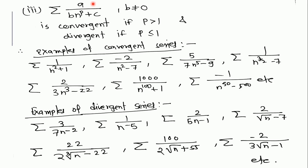For another type: if we have a series a / (b * n^p + c), where b is not equal to 0 — if b equals 0 then this becomes a constant series which is divergent — this series is convergent if p is greater than 1, and divergent if p is less than or equal to 1. Note that b must not equal 0, because if b equals 0 and a/c is not equal to 0, then this becomes a divergent constant term series. We can prove this using the comparison test: the p-series is convergent for p greater than 1 and divergent for p less than or equal to 1.